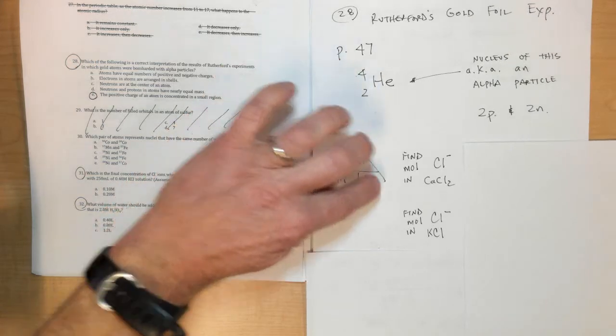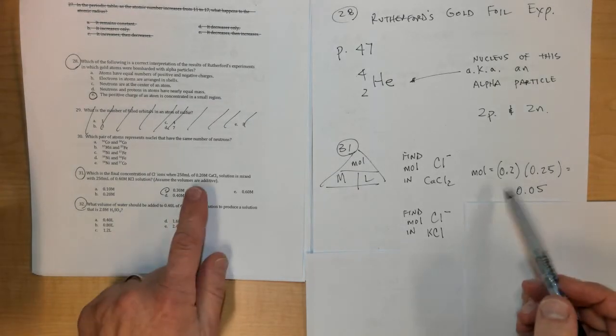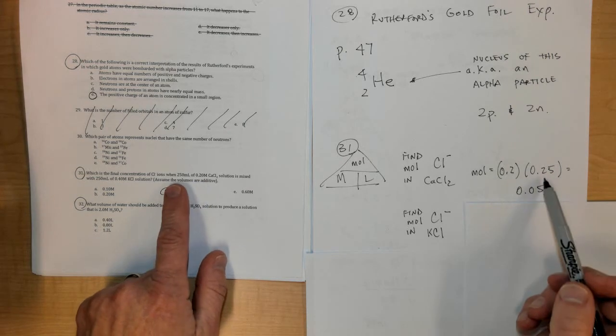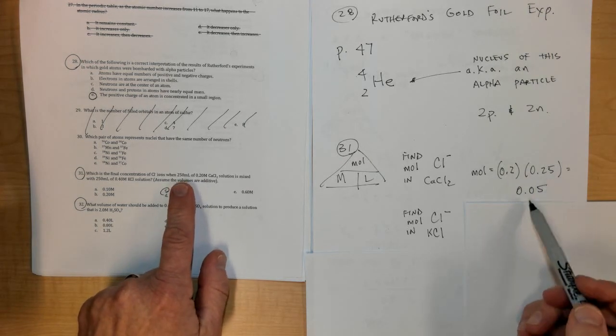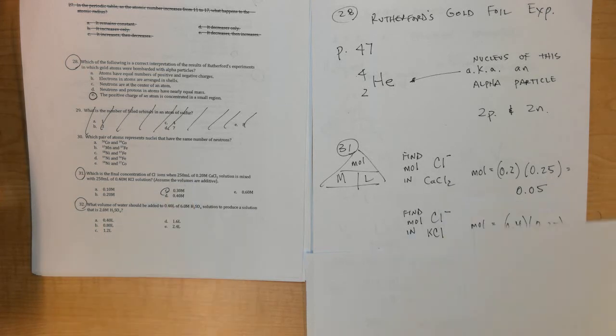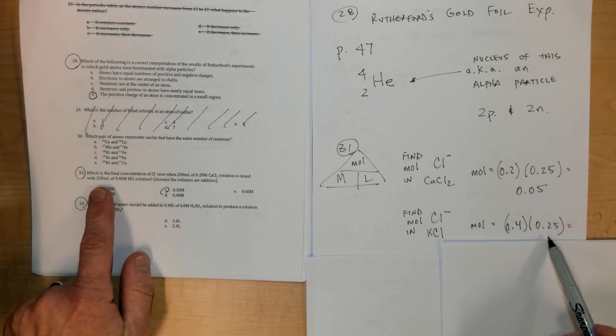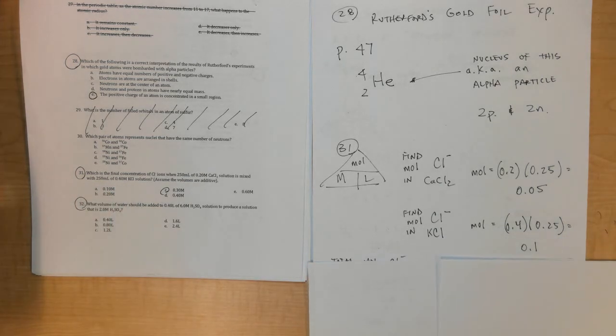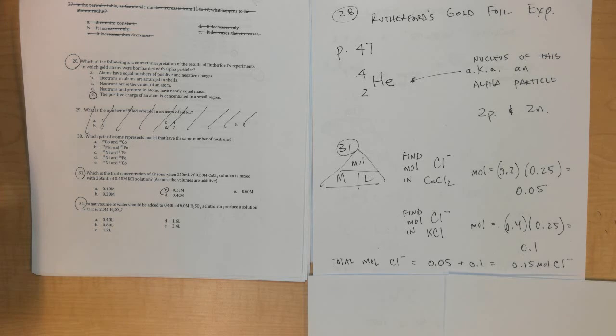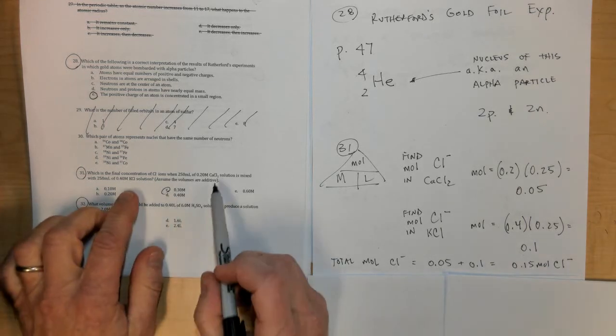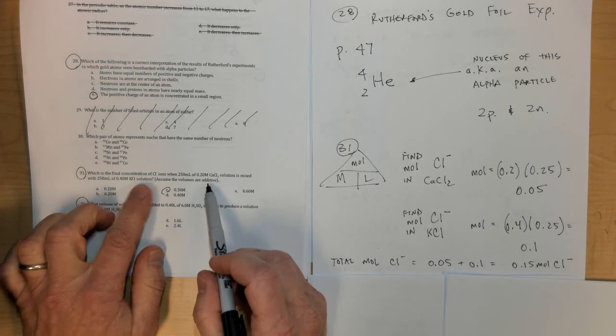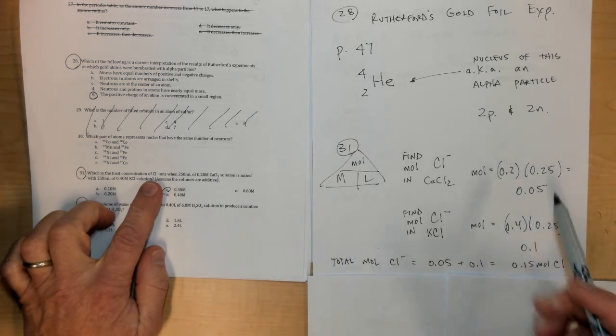To find the number of moles, moles are equal to molarity times liters. They give us the molarity is 0.2 molar and the liters is 0.25 (250 milliliters), and so we get 0.05 in CaCl2. In KCl is 0.4 and it's 0.25 liters - multiply those together and we get 0.1. Now we have to add those together, and there's a trick to this one because we have CaCl2.